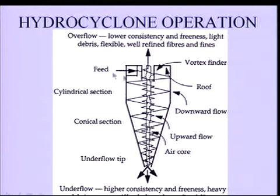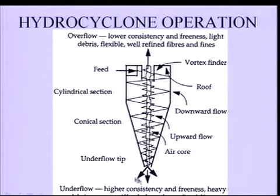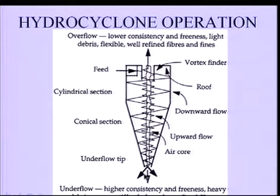Due to the size of the underflow tip, all the material from the feed cannot exit through the lower tip, so the remaining material swirls back up and finds its way out through the overflow tube. We have one feed stream entering tangentially at the top, and we have an underflow and an overflow stream. High-density material comes out from the underflow tip, and low-density material — plastic, styrofoam, stickies — comes out through the overflow.